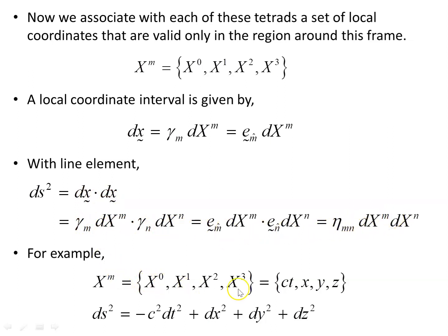For example, if we choose Minkowski coordinates c, t, x, y, z, we get the familiar Minkowski line element — the spacetime interval ds squared. Notice the signature being used here: negative one, plus, plus, plus.